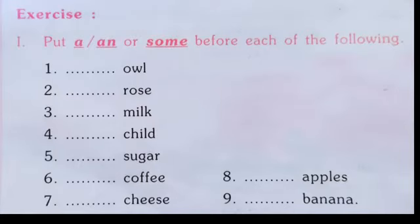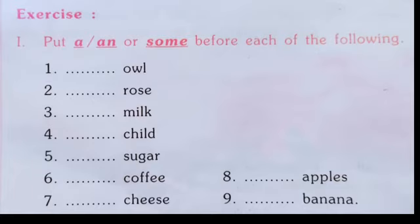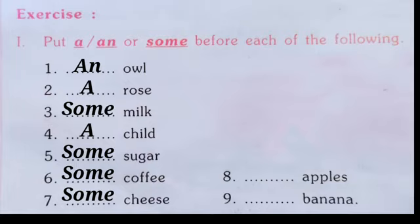In the next exercise, we fill in the blanks with 'a', 'an', or 'some'. We know that 'a' or 'an' comes before countable nouns. 'An' comes before singular countable nouns that begin with vowels — A, E, I, O, U — while 'a' is added before singular countable nouns that begin with consonants. 'Some' comes before uncountable nouns. So our answers will be: an owl, a rose, some milk, a child.